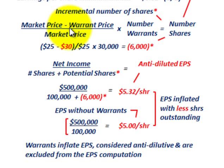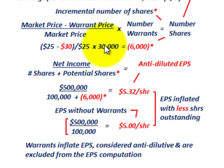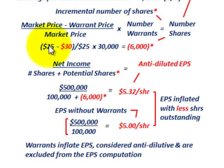Working through that equation: our market price was $25 per share and the warrant price was $30 per share. Right away we have a negative number — negative $5 per share subtracting the two. Dividing by the market price of $25 per share, then multiplying by the 30,000 warrants, we get negative 6,000 shares — simply because our market price was less than the warrant price.